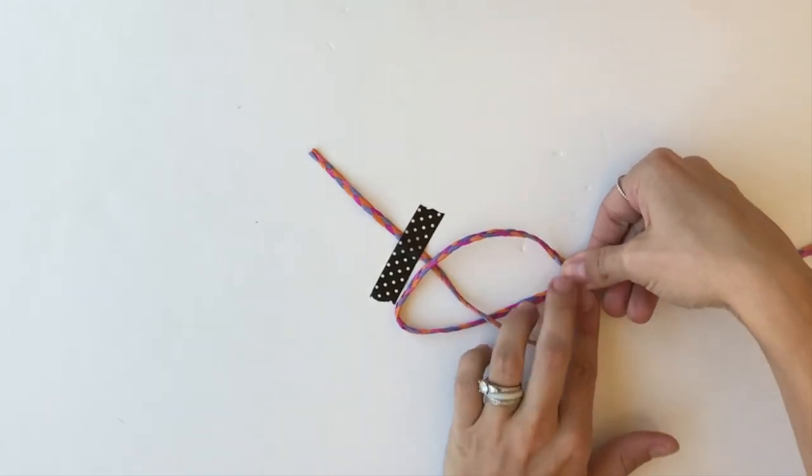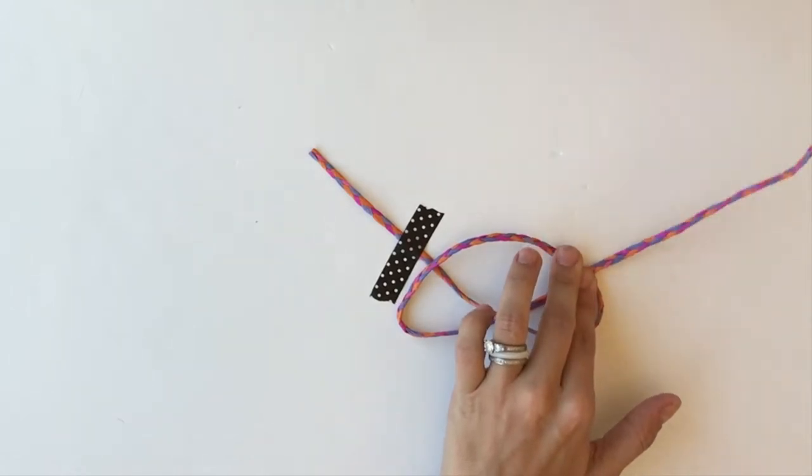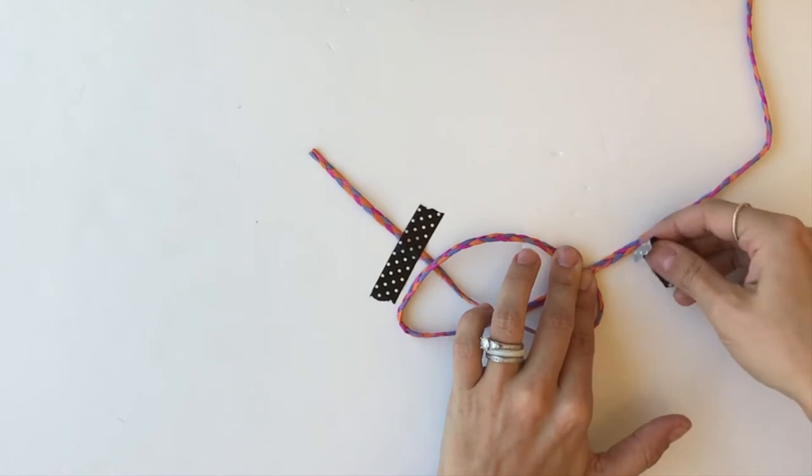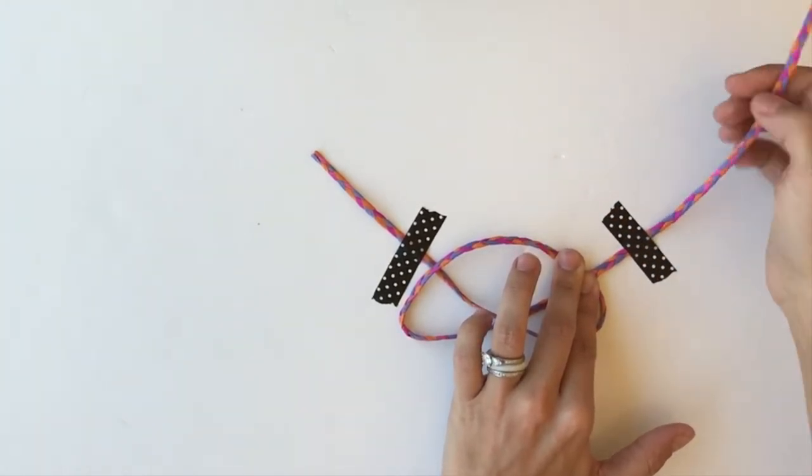The next thing I'm going to do is take that same piece and loop it back around without going underneath. To keep this in place and from moving around, I'm going to use another little piece of washi tape to just hold it steady while I'm working with it.